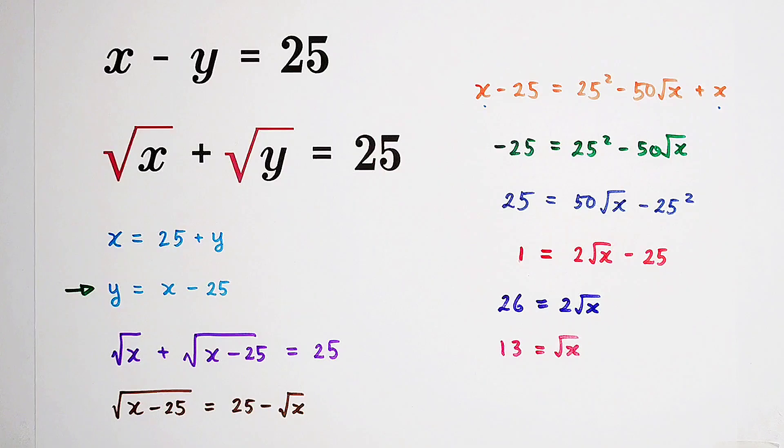And what's x? x is 169. What about y? y is x minus 25. It is 169 minus 25. It is 144.